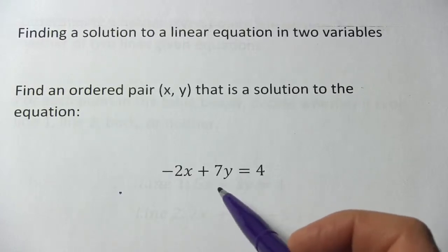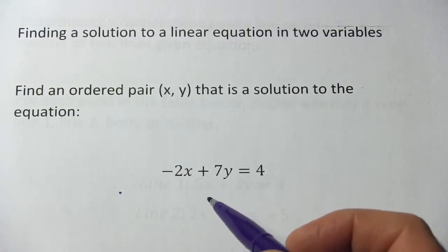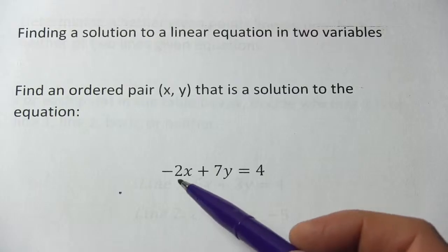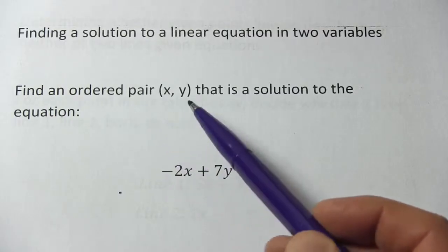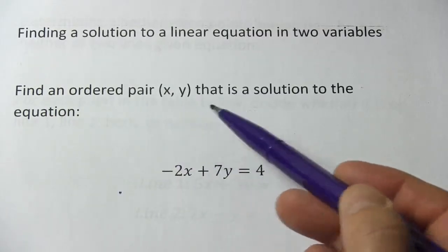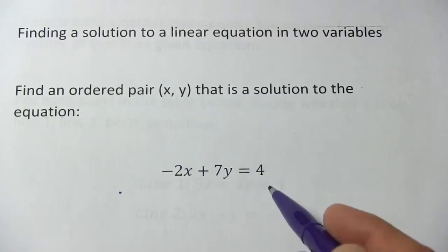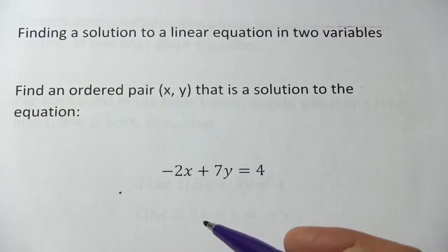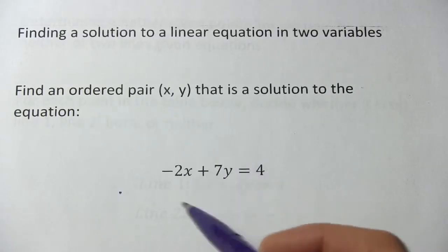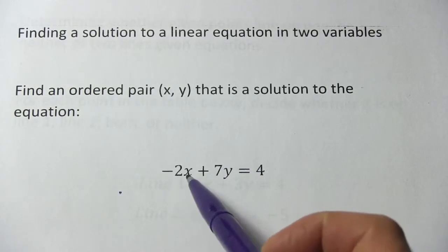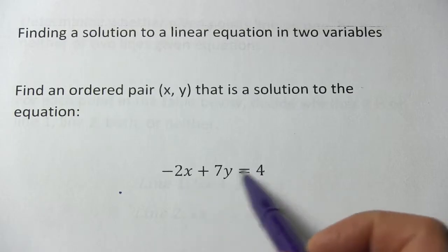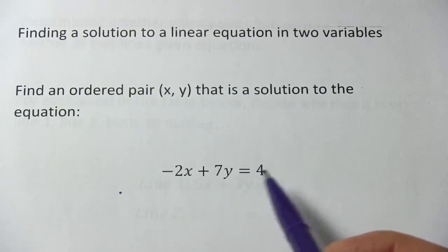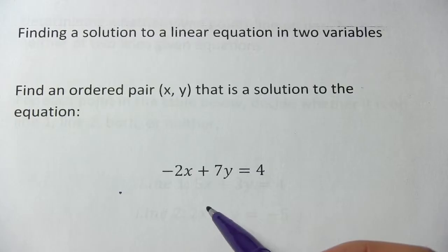In this problem, we have an equation with two variables, an x and a y, and we're being asked to find an ordered pair — some x value and some y value — that's a solution to this equation. There are infinitely many solutions. You could put in many, many different pairs of numbers, but how do you find one that actually works?